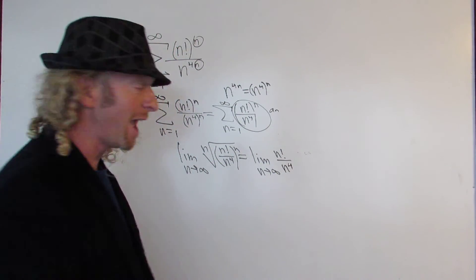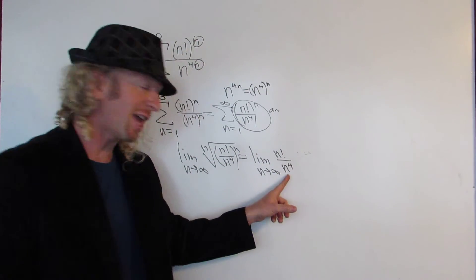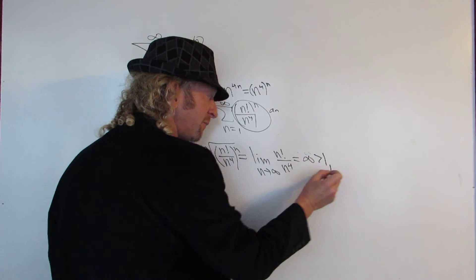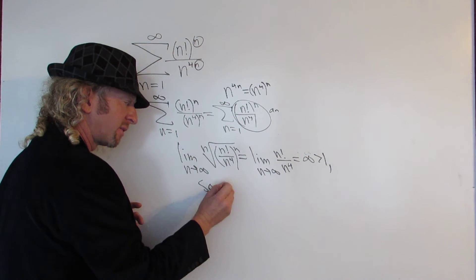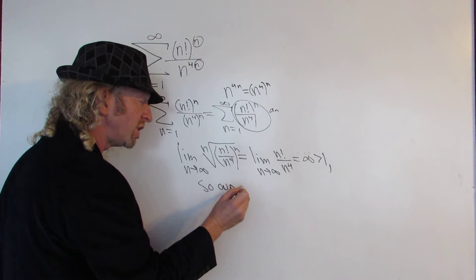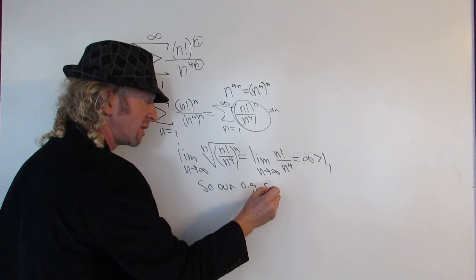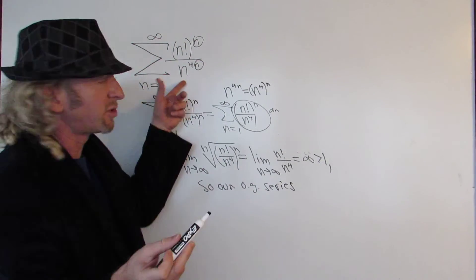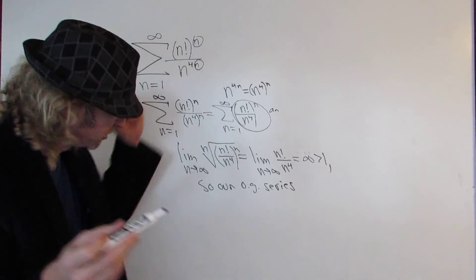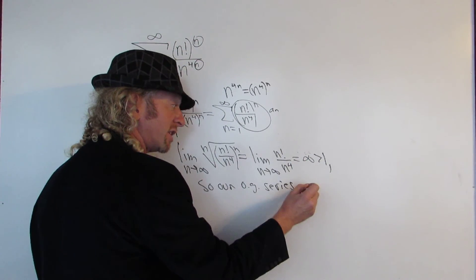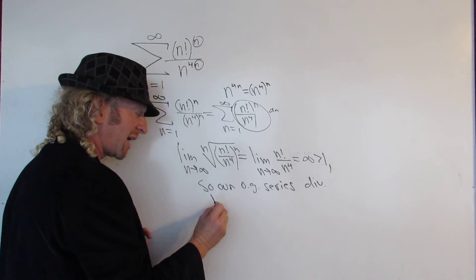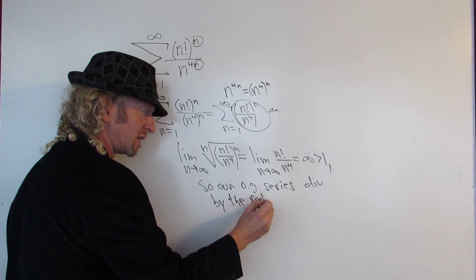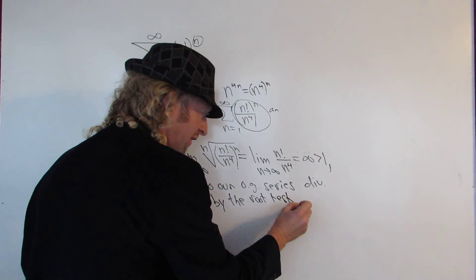Factorial grows way faster than any polynomial, so this is equal to infinity, which is bigger than 1. So our original series diverges — by the root test.